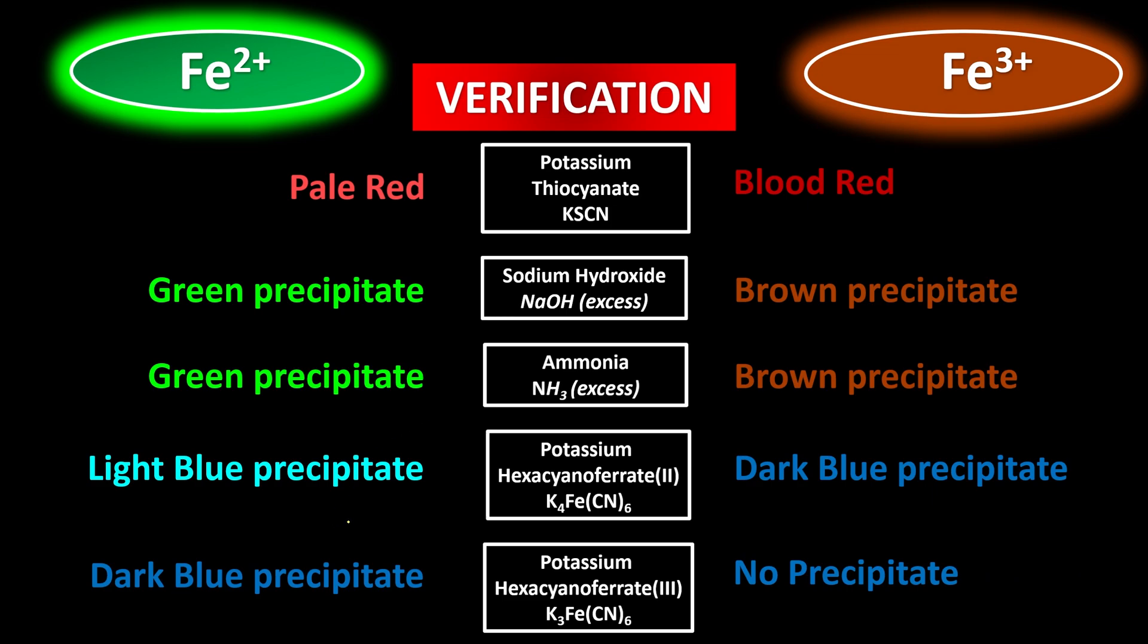And the one last one is potassium hexacyanoferrate(III). This is a more special one where iron(II) now finally is darker in color. But now, its friend iron(III) is no more precipitate. So this is how you're going to verify the iron(II) and iron(III) ions.